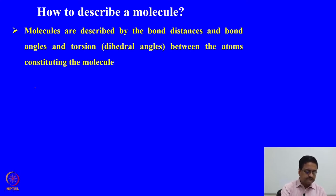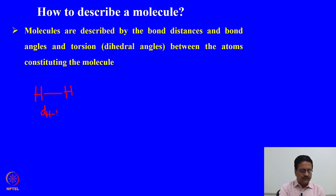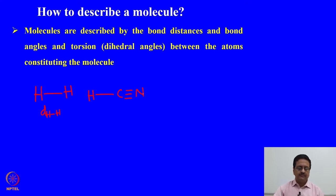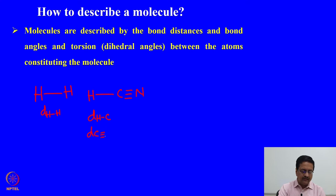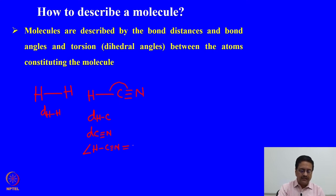For simple molecules like hydrogen, which is a linear molecule, it is sufficient to know the distance between the two hydrogen atoms, that is the bond length. Then if we think of a linear molecule like HCN, written with a single bond and a triple bond, we need to define the distance between hydrogen and carbon and the distance between carbon and the triple-bonded nitrogen. We also need to know the angle between hydrogen, carbon and nitrogen — we may say this molecule is linear if this angle is 180 degrees.